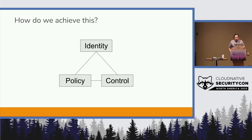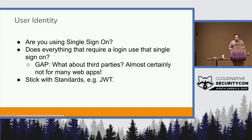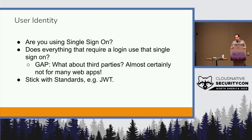How do we achieve this? Going back to identity, policy, and control — we can use the previous example of user identity. With user identity, we mentioned single sign-on. Does everything require a login to use that? Many third parties don't actually support single sign-on, so that ends up being a major gap. This becomes really difficult with enterprises that have controlled or very sensitive information, where a developer or user might log in to a third-party system not in your control — and if they leave the company, how do you shut down those systems?